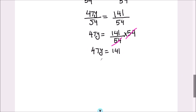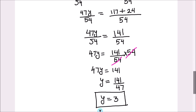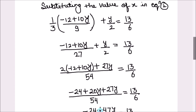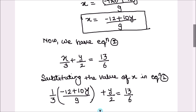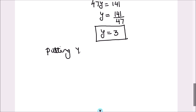To find the value of y we divide 141 by 47. Since 47 times 3 is 141, the value of y is 3. Now that we have y, we can substitute it back into any equation to find x. Let's use equation 3 — putting y equals 3 into equation 3.